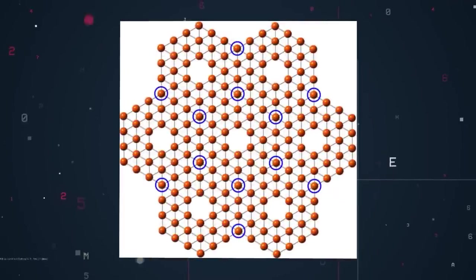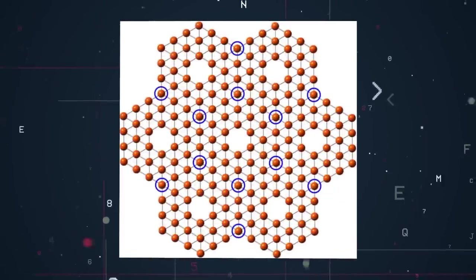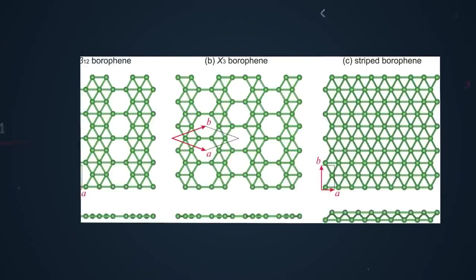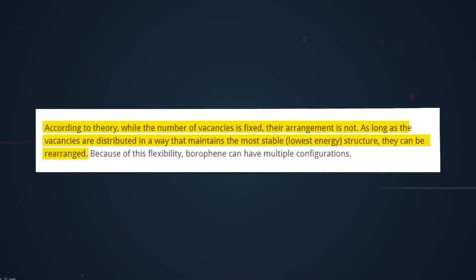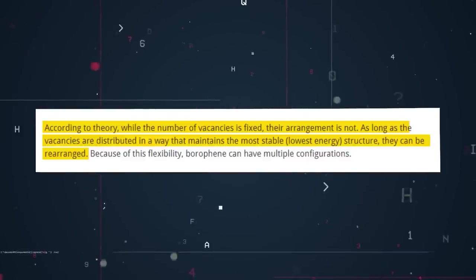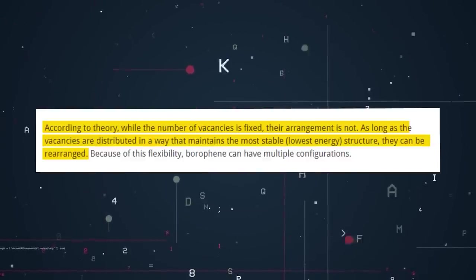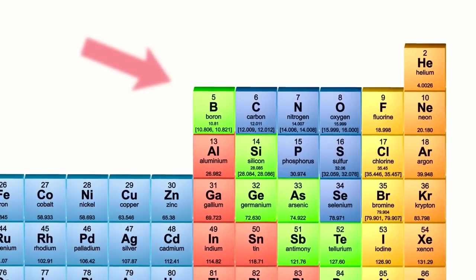Where they differ is that borophene periodically has an extra boron atom in the center of the hexagon. The crystal structure tends to be theoretically stable when about four out of every five center positions are occupied and one is vacant. According to theory, while the number of vacancies is fixed, their arrangement is not. As long as the vacancies are distributed in a way that maintains the most stable, lowest energy structure, they can be rearranged. Because of this flexibility, borophene can have multiple configurations.